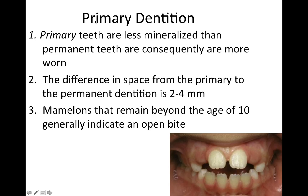We'll start on the primary dentition with number one: the primary teeth are less mineralized than permanent teeth and as a consequence they're going to be more worn. Number two, the difference in space from primary to permanent dentition is two to four millimeters in arch length.